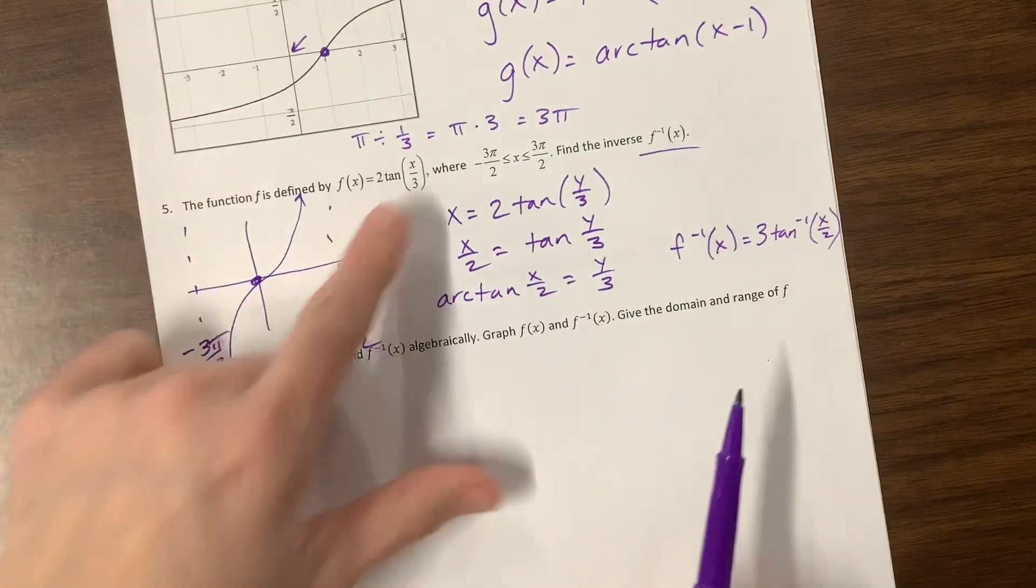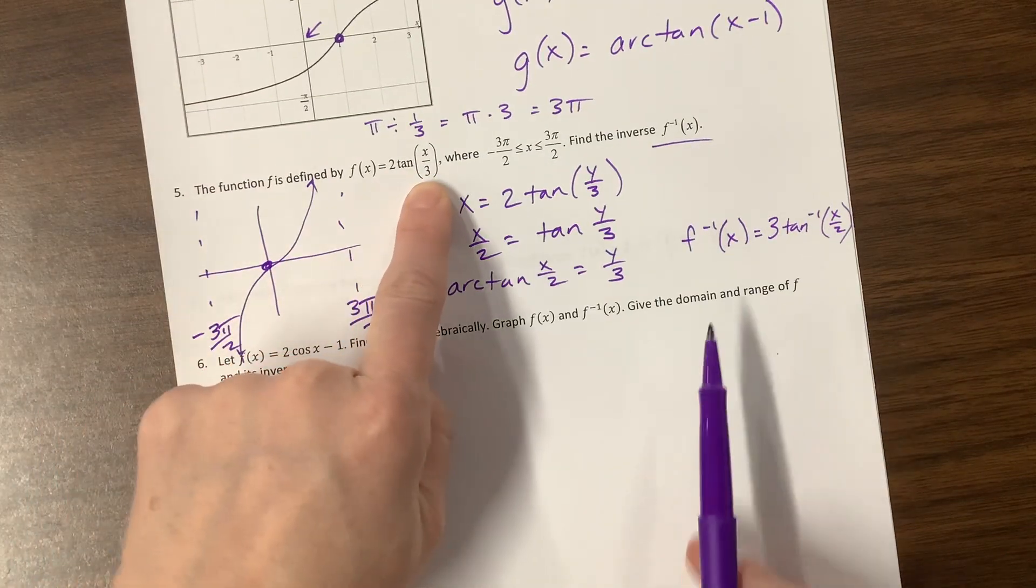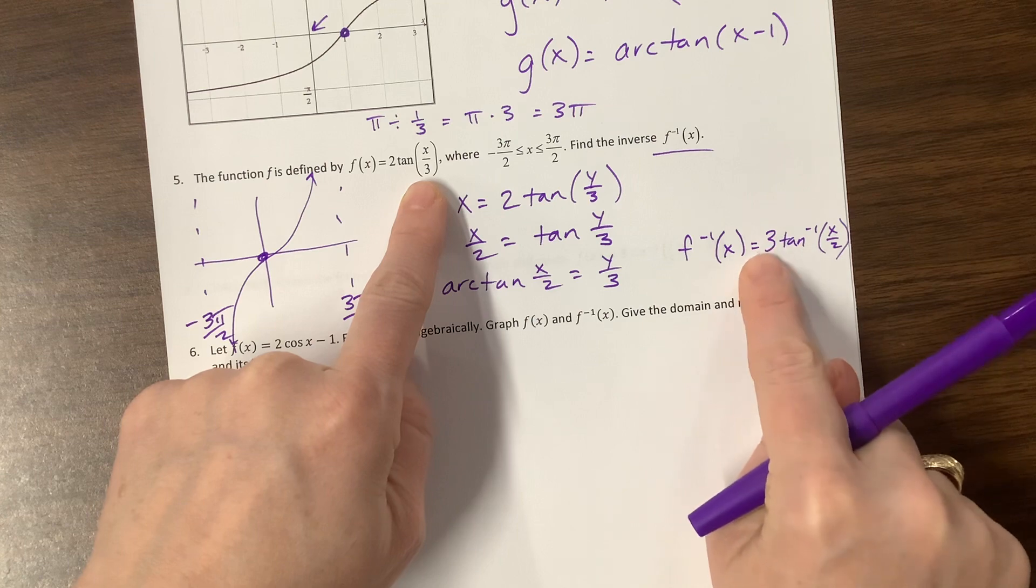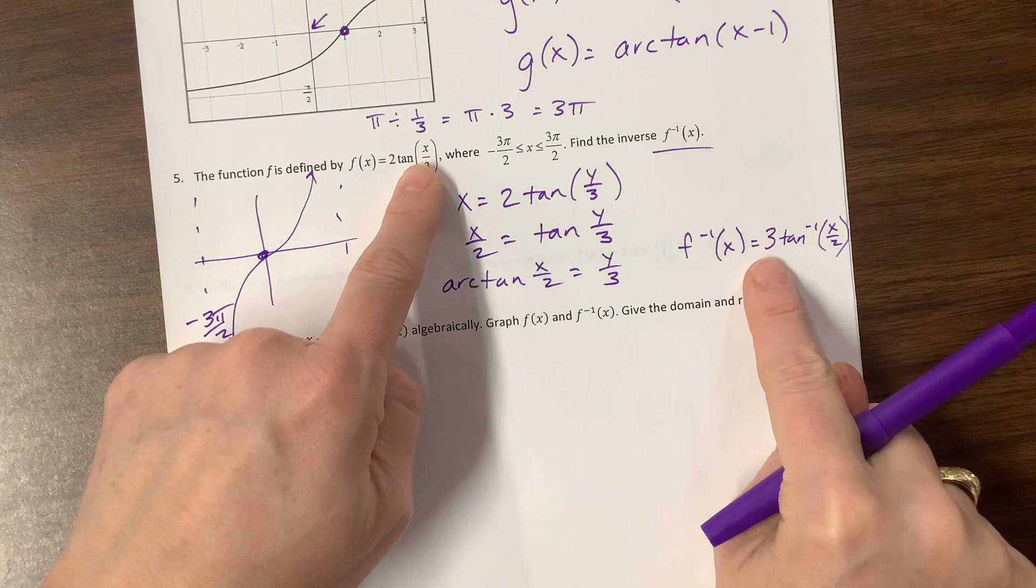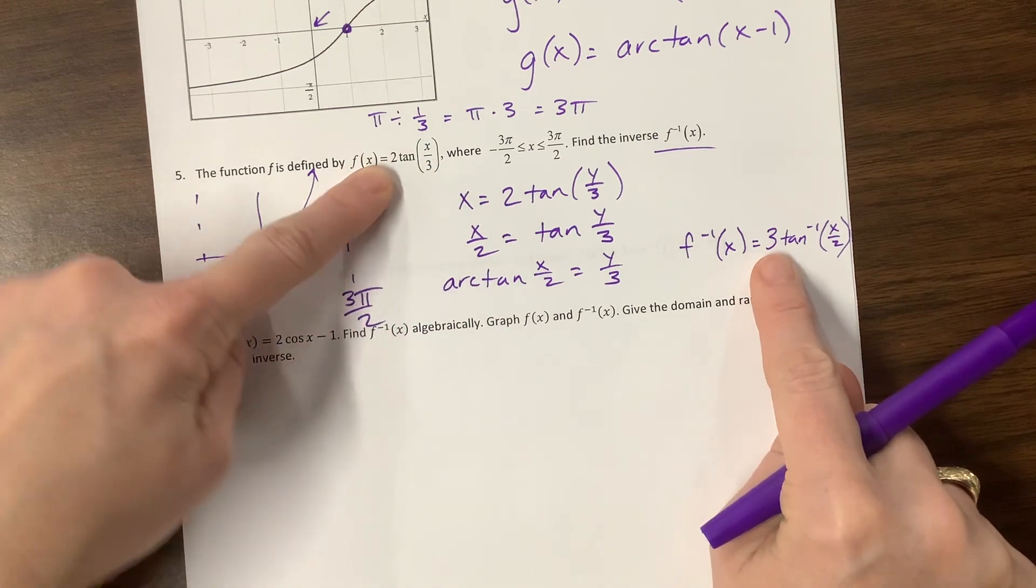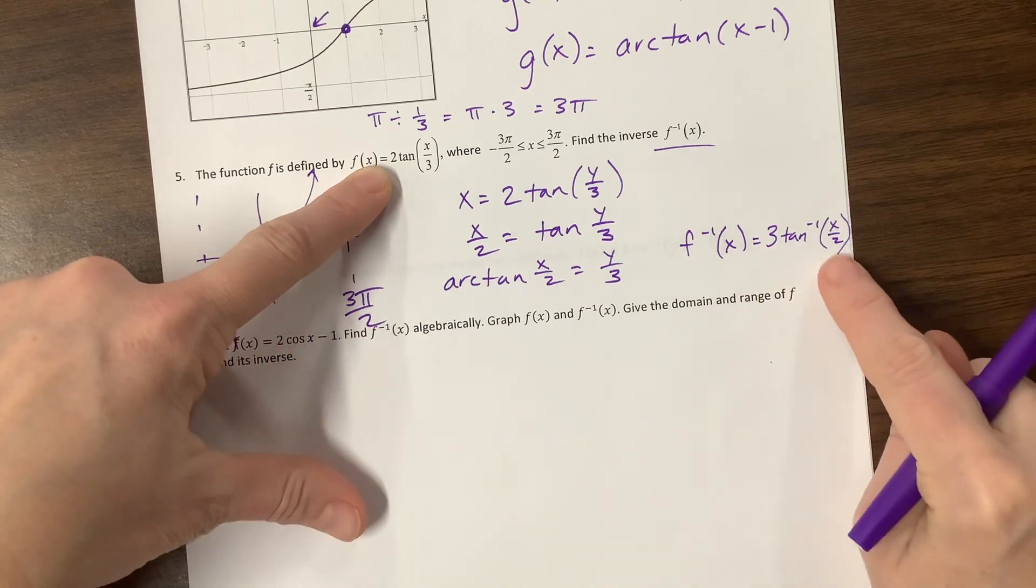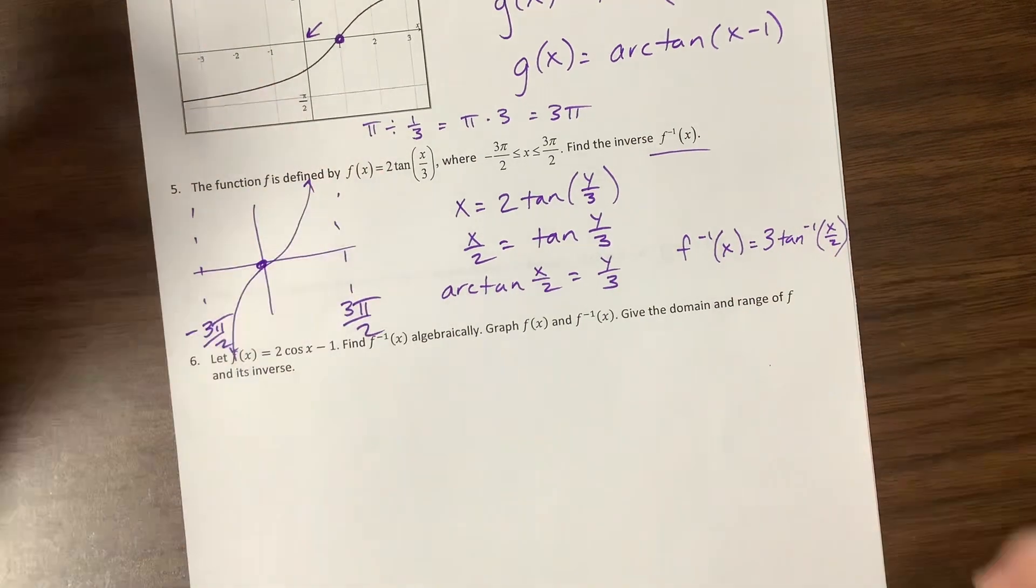You'll notice this 3 was a horizontal stretch by 3. This 3 is a vertical stretch by 3. If those things, if what happens horizontally doesn't do the same thing vertically, then you messed up somewhere along the way. This was a vertical stretch, and now this is a horizontal stretch. So this tells us we're doing the right thing.